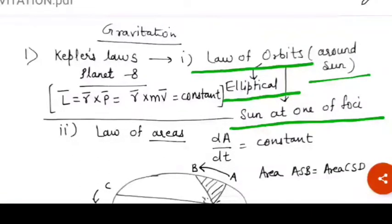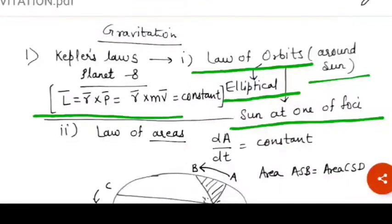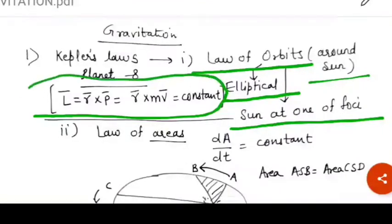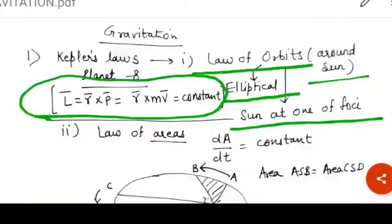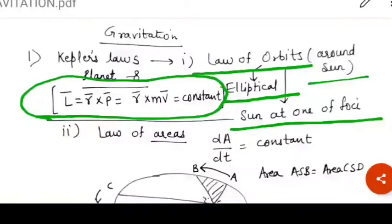Now basically this law obeys conservation of angular momentum. Whenever any planet revolves around the sun, the only quantity which remains constant is the angular momentum at no condition.